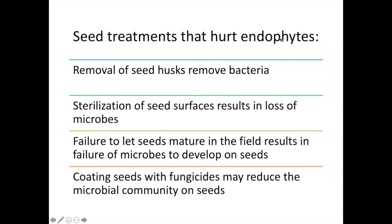Anything that hurts the microbes vectored in or on seeds is bad for the seedling, the plant, and the crop. For example, Bermudagrass seeds come with a husk that covers the seed and vectors the bacteria. When we remove that husk to make seeds germinate faster, we then have to coat the seeds with fungicides because pathogens attack those seeds. The seeds germinate faster, but pathogens come right away — we've compromised the Bermudagrass seed.